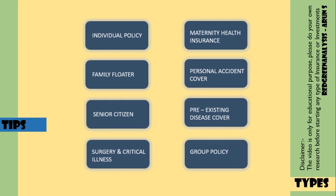Another type is critical illness cover. Critical diseases are very expensive to treat — for example, heart attacks or kidney disease involve a lot of cost. This policy helps cover those major medical or hospitalization expenses. There are possibilities of emergencies in the future, so it is important to have this cover.